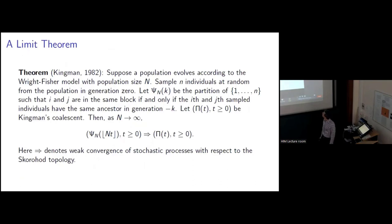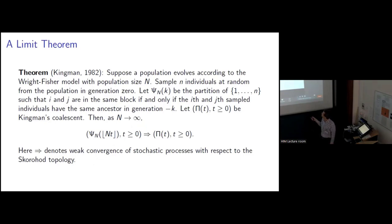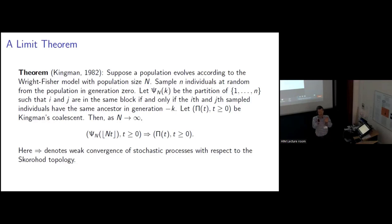Here is a precise limit theorem. Suppose we have a population that evolves according to the Wright-Fisher model with a population of size capital N. We sample lowercase n individuals at random in generation zero. We can define ancestral processes that describe what happens as we follow the ancestral lines backwards in time. So psi_N of K will be the partition of the integers one through n such that i and j are in the same block if and only if the i-th and j-th individuals in the sample have the same ancestor in generation minus K. As the population size N tends to infinity, these ancestral processes with time sped up by a factor of N converge to Kingman's Coalescent.